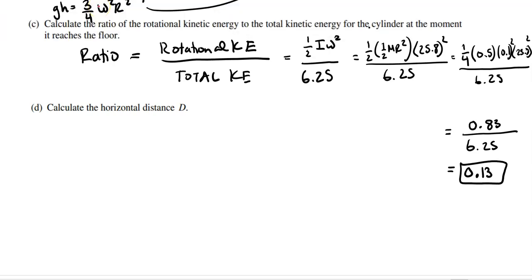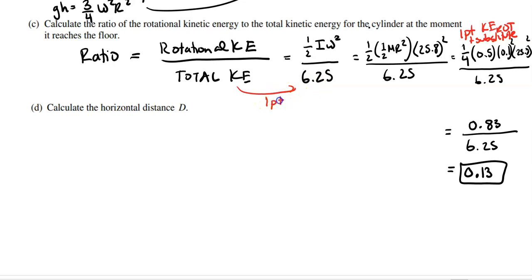For the AP rubric on part C: one point for correctly substituting into KE rotational and substituting all given values. One point for correctly finding KE total = 6.25 joules with correct substitutions. So this part is worth two points.